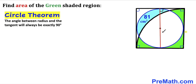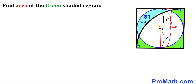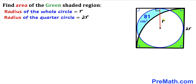Therefore these two lines are parallel to each other. Let's assume the radius of the whole circle is lowercase r. Then the diameter across the circle is r plus r equals 2r. Since the side length of the square equals this distance, the side of the square is 2r. So the radius of the whole circle is r, and the radius of the quarter circle is 2r.